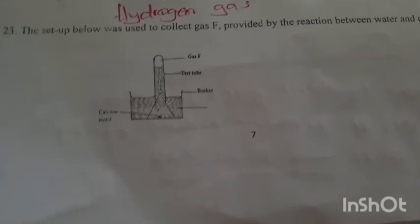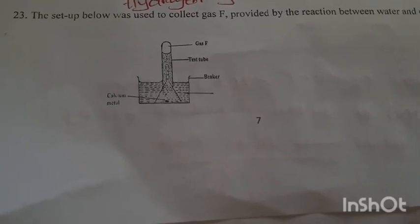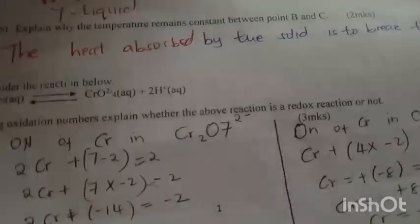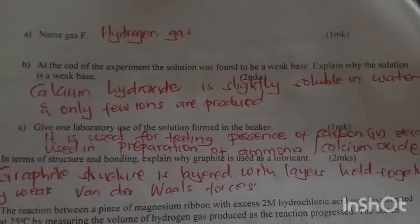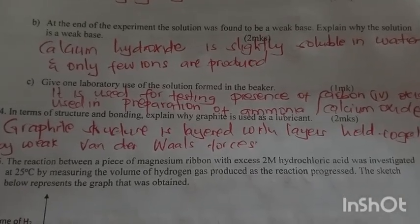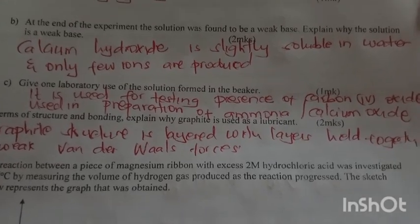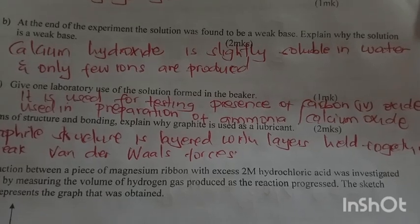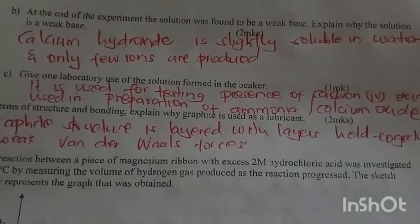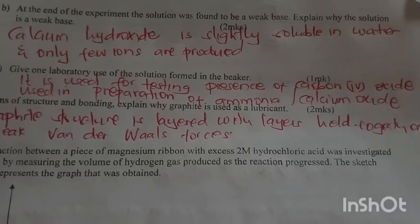The setup below is used to collect gas produced by reaction between water and calcium metal. Name the gas. The gas is hydrogen gas. At the end of the experiment, the solution was found to be a weak base. Explain. Calcium hydroxide is slightly soluble in water and only few ions are produced. Give one laboratory use of the solution in the beaker. It is used for testing for the presence of carbon dioxide. It is also used in preparation of ammonia.